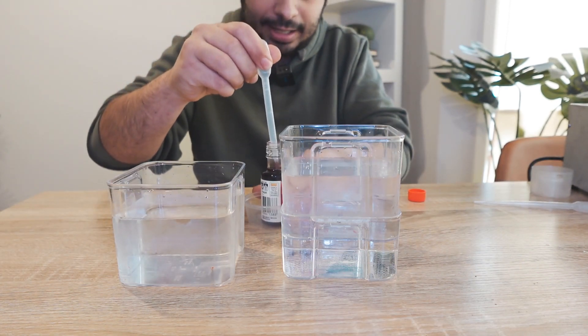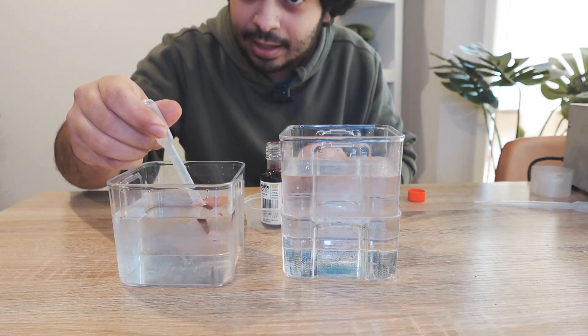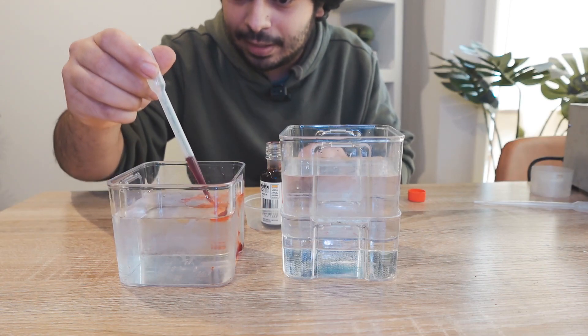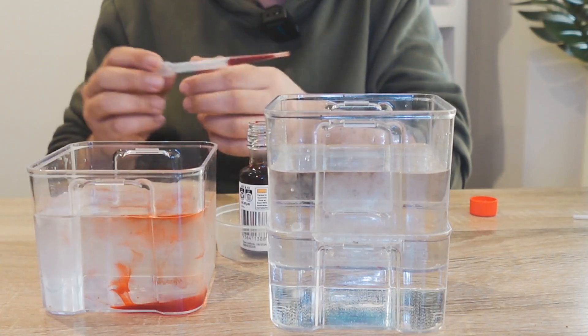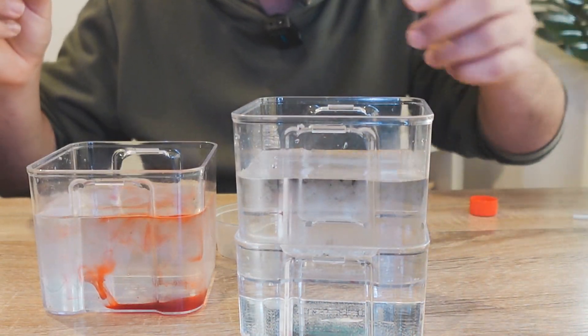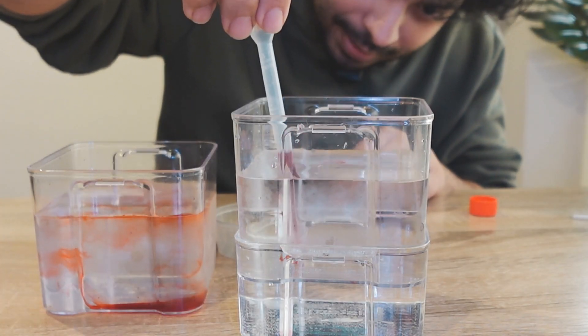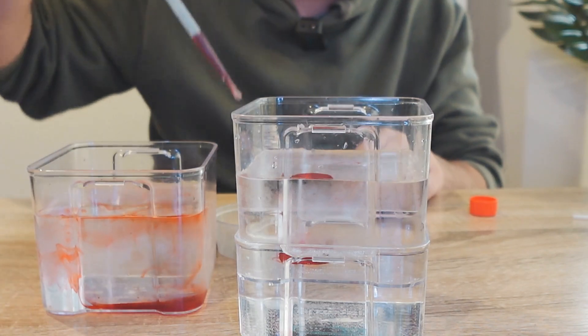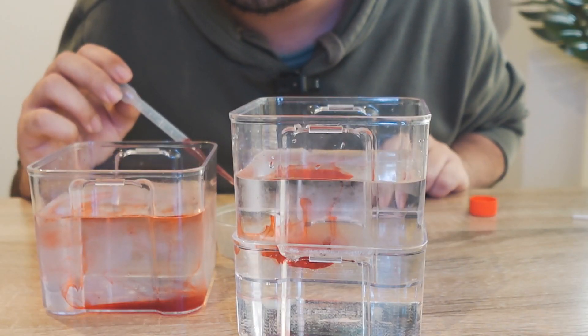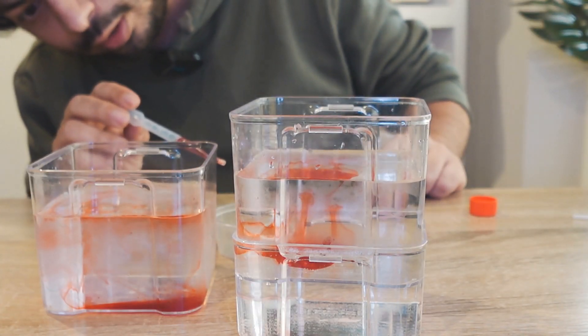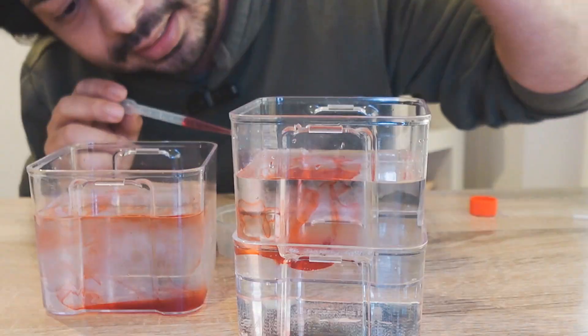Alright, so if we take some food dye here, I'm going to bring it all the way to the bottom and then drop it in. So all the way to the bottom, I'm going to drop some in, which is down the bottom of the container. You can see it's just staying there. It's not moving that much. Now, watch what happens when I do the same thing to this water. I'm going to bring it down and drop it down the bottom. And then I'll bring it back up. Give it a little time because the cold water at the top is quite cold.